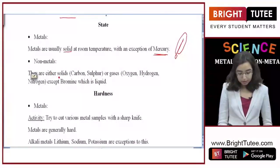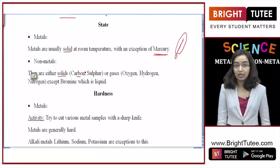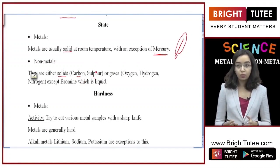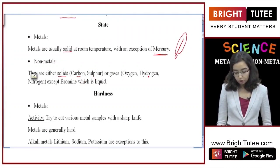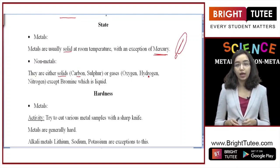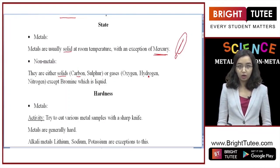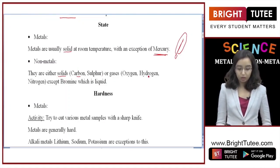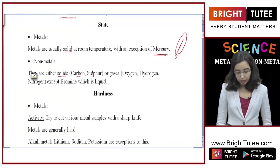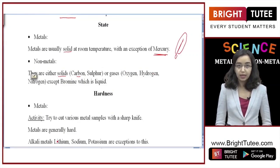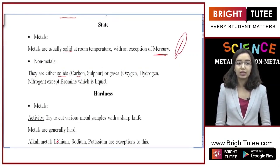When we talk about nonmetals, they can be solid — for example carbon, which exists as graphite or diamond, or sulphur which is also a solid. They can also be gaseous, like oxygen, hydrogen, or nitrogen, which exist in the air in gaseous form. There is also an exception of bromine, which exists as a liquid. So for solid nonmetals we have carbon and sulphur, for gaseous nonmetals we have oxygen, hydrogen, and nitrogen, and the exception to both these states is bromine, which is liquid.